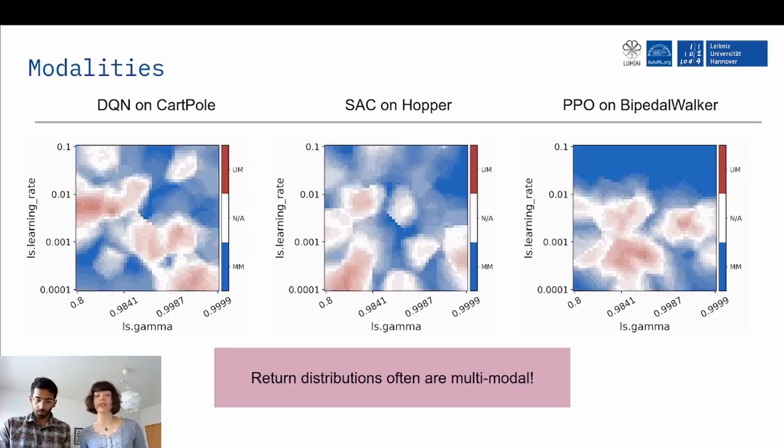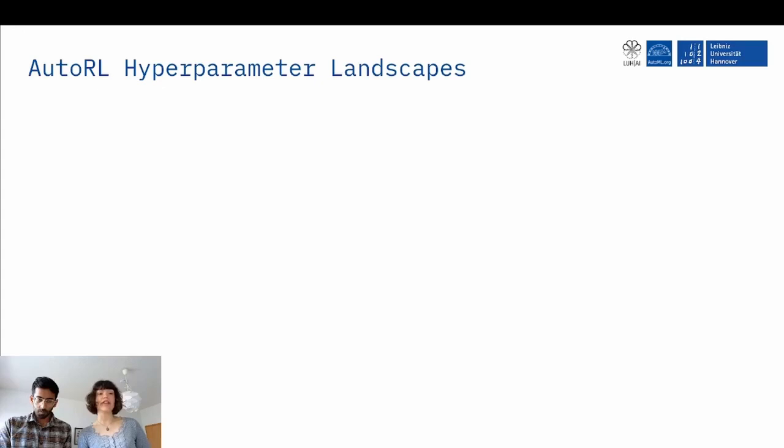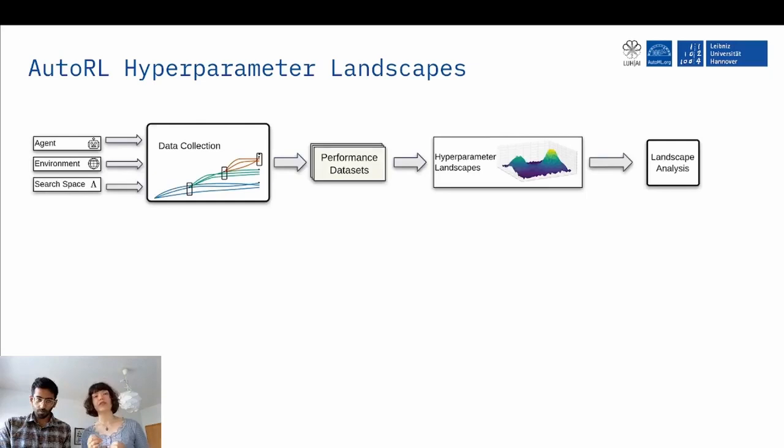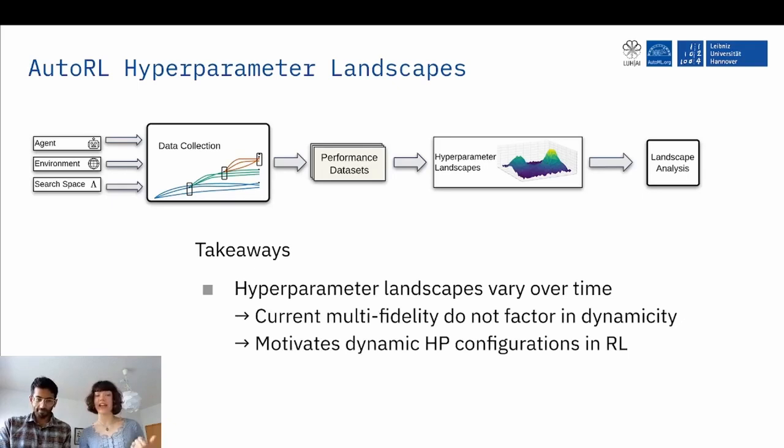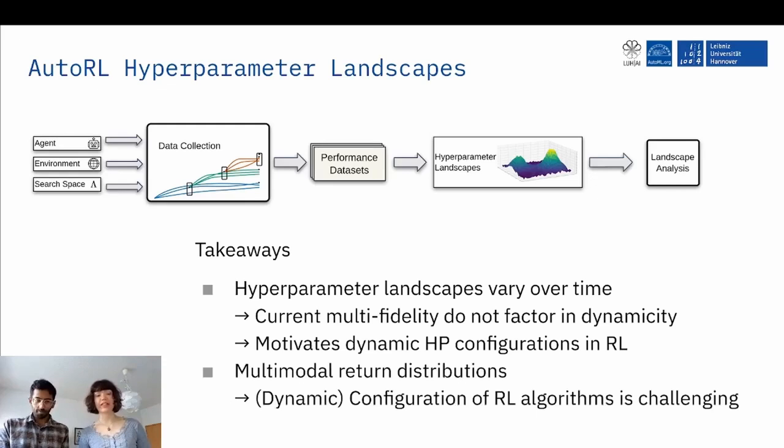So to summarize our AutoRL hyperparameter landscapes, we presented you a pipeline, how to collect data in different phases for specific time points and construct hyperparameter landscapes and perform analysis on that. So our main takeaways here are hyperparameter landscapes do vary over time. This might mean that current multifidelity methods are not fit to deal with RL. And this definitely motivates dynamic hyperparameter configurations in reinforcement learning. And the second one is that we have multimodal return distributions. That means dynamic configurations of RL algorithms definitely is challenging because how to estimate them. So we would be very happy if you would check out our GitHub repository and our paper and we would be even more happy if you come talk to us at the conference. So see you there.